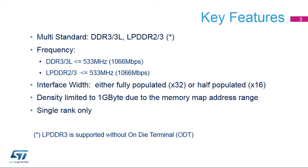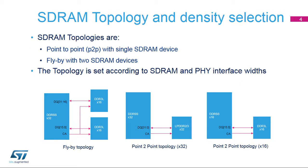DDR3 and DDR3L memories are similar except for the supply voltage: 1.5V for DDR3 and 1.35V for DDR3L. For simplification, we refer only to DDR3L. DRAM topologies can be point-to-point, or P2P, applicable with a single SDRAM device on the board. This is the case with 16-bit DDR3L or 32-bit LPDDR2 or LPDDR3 memories.